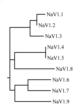Diversity: Voltage-gated sodium channels normally consist of an alpha subunit that forms the ion conduction pore and one to two beta subunits that have several functions including modulation of channel gating. Expression of the alpha subunit alone is sufficient to produce a functional channel.